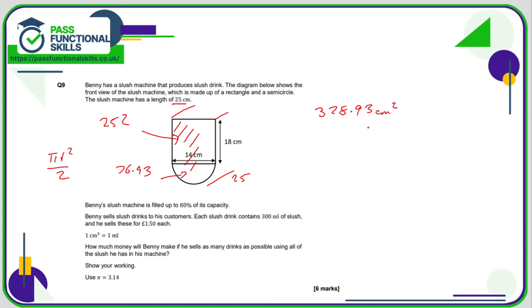Now for the volume, we're going to multiply this by 25, so therefore the volume is 8223.25 cubic centimeters. Now it's filled to 80% of its capacity. So what is 80 percent of this amount? We're going to multiply that by 0.8, and that comes to a new total of 6578.6 cubic centimeters. So that is the amount of drink that's in there. Now each individual drink is 300 milliliters, and we've been told that a cubic centimeter is one milliliter. So we can simply turn this into 6578.6 milliliters.